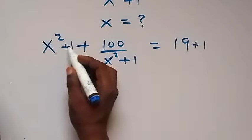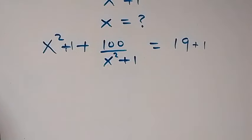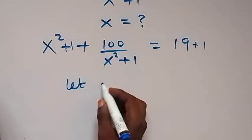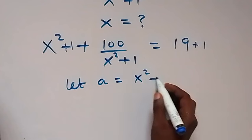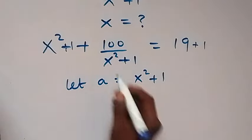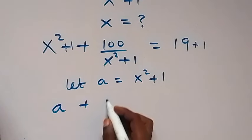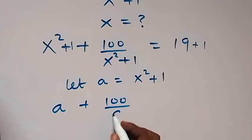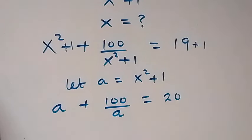Now let's use a letter to represent that. Let the letter a be equal to x squared plus 1. Then this equation becomes a plus 100 over a equals 20.